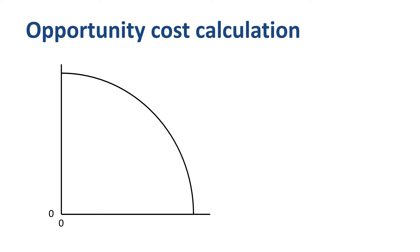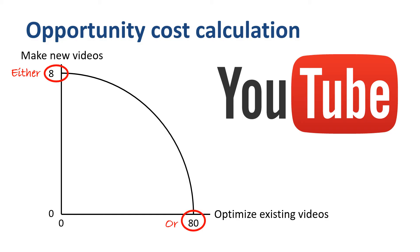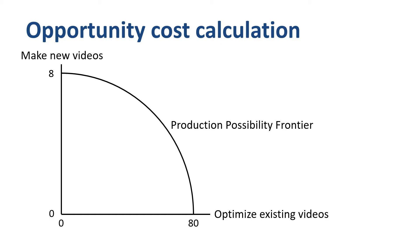Here's one such opportunity cost example. Let's assume you are running a YouTube channel. In any given workweek, you have two, and only two, ways to grow the channel: making new videos, and optimizing existing ones — thumbnails, titles, keywords, that sort of stuff. You can either make 8 new videos, or optimize 80 existing videos, or a combination of both activities. This curve is called the production-possibility frontier — a curve illustrating the varying combinations of two activities that can be undertaken when both depend on the same finite resources, in this case time.